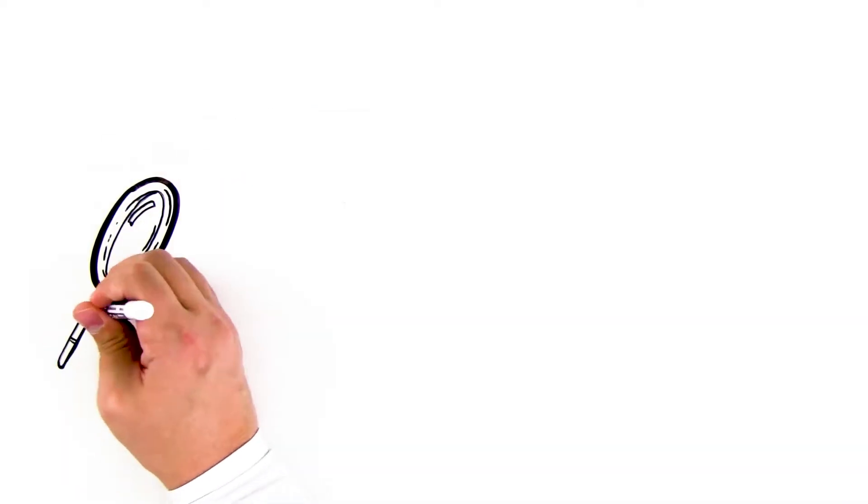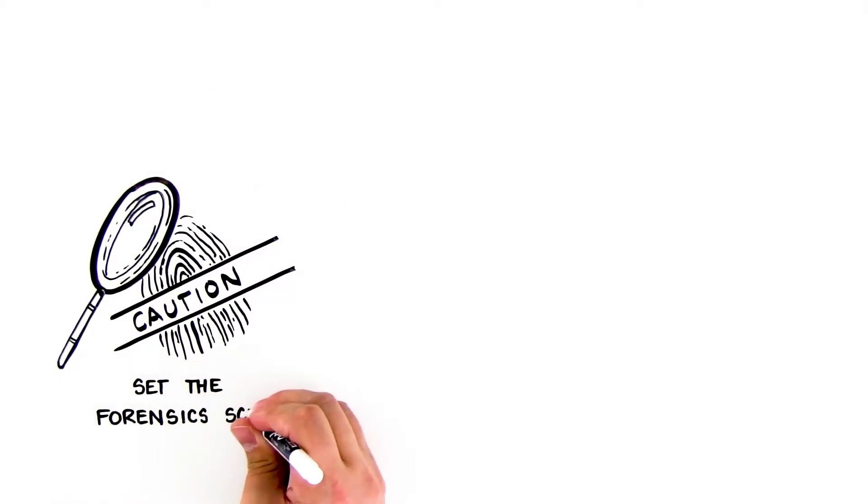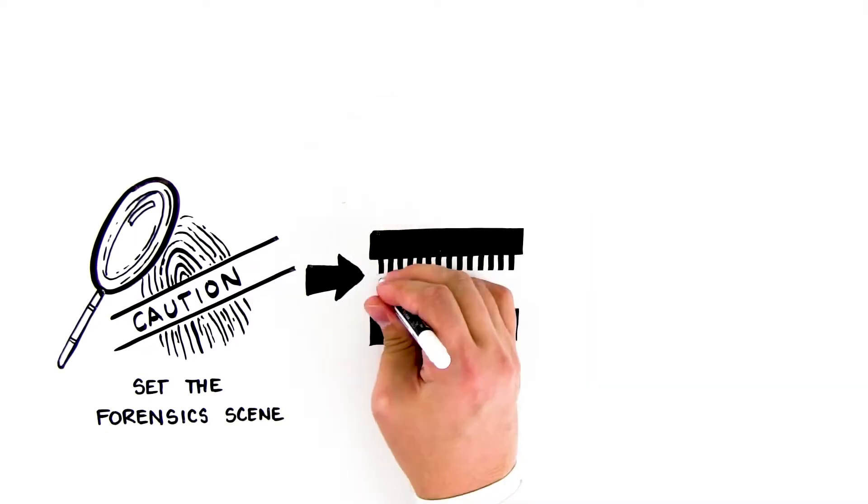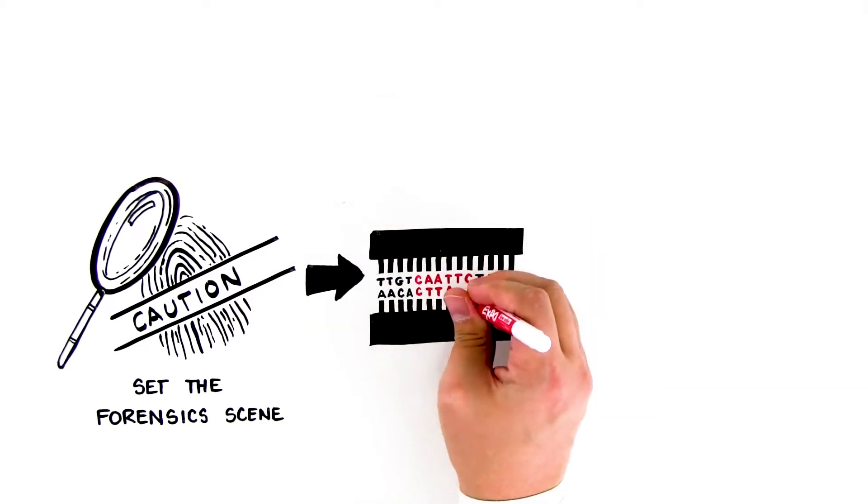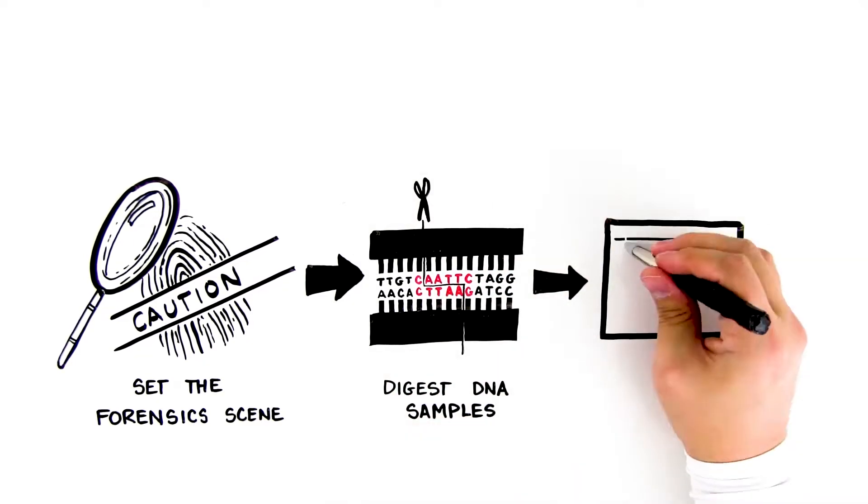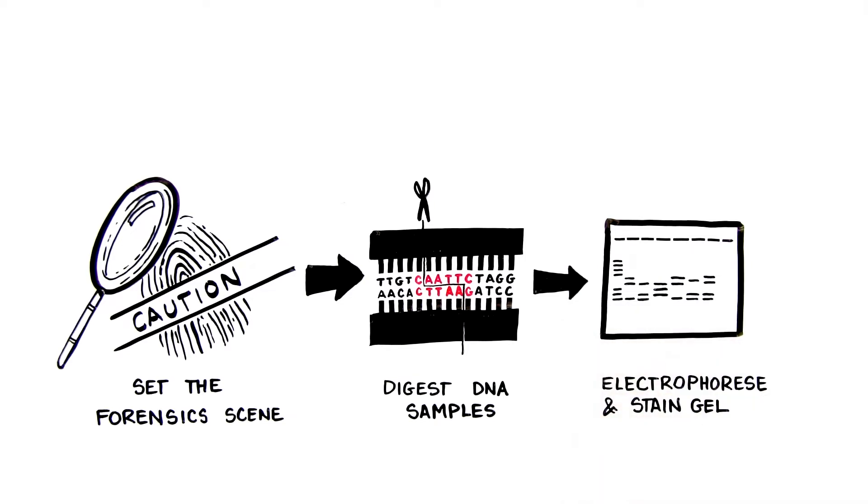In BioRad Explorer's Forensic DNA Fingerprinting Kit, students use real DNA evidence to solve a crime. Students use restriction enzymes to digest DNA samples from a crime scene and separate the fragments using agarose gel electrophoresis to produce real DNA fingerprints.